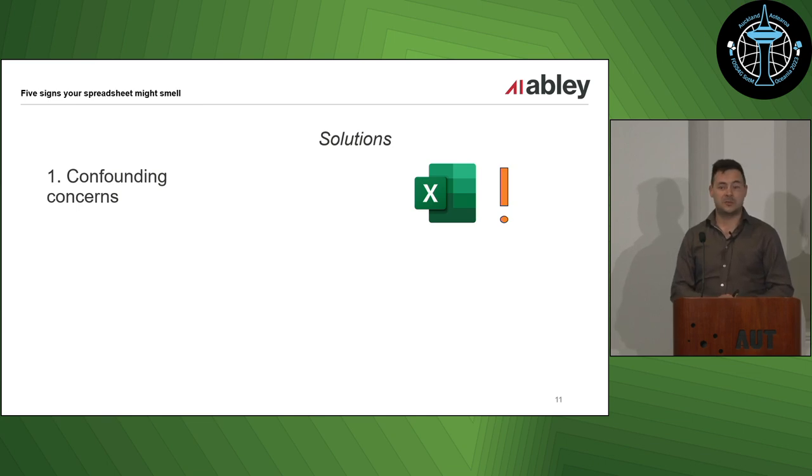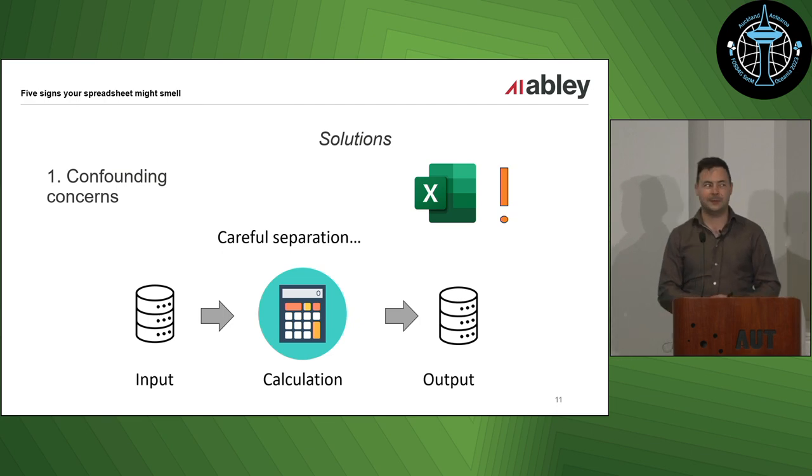And one of the potential solutions is actually a spreadsheet. Surprise. But a carefully designed spreadsheet. So what you need to do is really carefully unpick what's the data that's coming into my process, what's the calculation, and what's the output. So you can use multiple tabs to do this, very careful column naming and things like that. And that sort of separation concerns is something we do quite a lot in coding, software development, but people, yeah, it's so easy to jumble things in a spreadsheet that it doesn't happen that much.